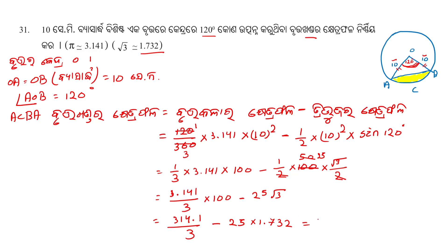3.141 by 3 — that means you can write this. This is 10, 341 by 332, 25 degrees, 1.732, 25 degrees.